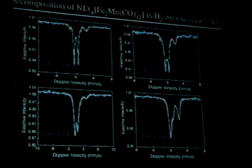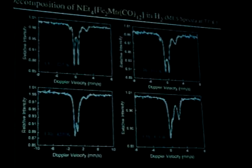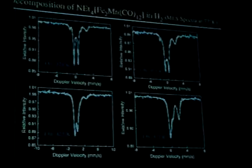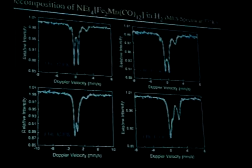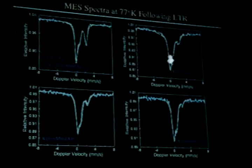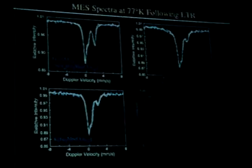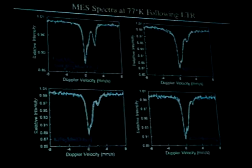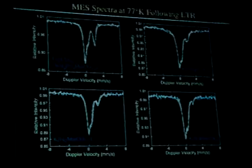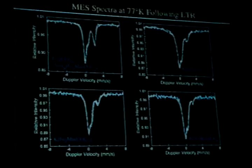Even though the clusters break up into separate iron and manganese clusters, they are still in very close contact, because activities and selectivities are still affected by the presence of the promoter. The Mössbauer spectra after low temperature reduction for all catalysts showed very similar spectra, indicating the iron retains what we call a 'D structure,' which also contains some iron 3+ or iron carbide.